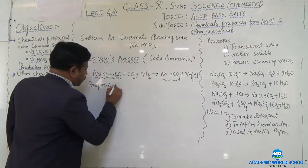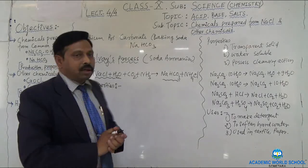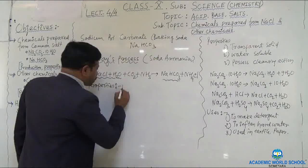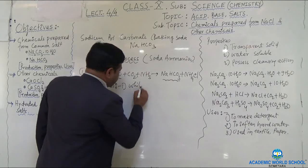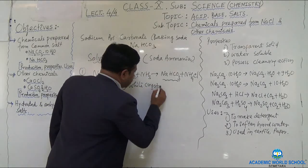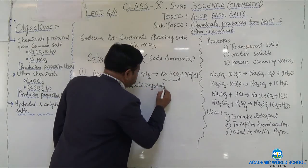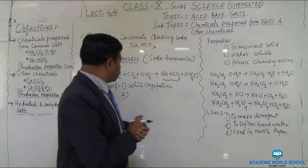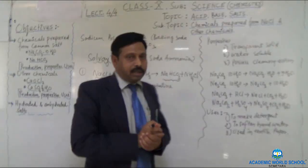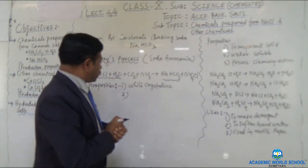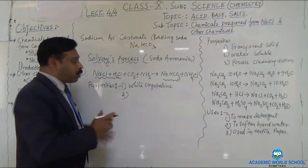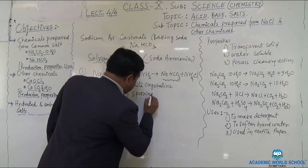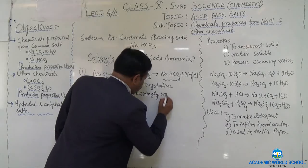Sodium bicarbonate is called baking soda. The formula is NaHCO₃. The properties of sodium bicarbonate: first, it is a white crystalline solid — crystalline means having a geometrical shape; second, sodium bicarbonate is sparingly water soluble.